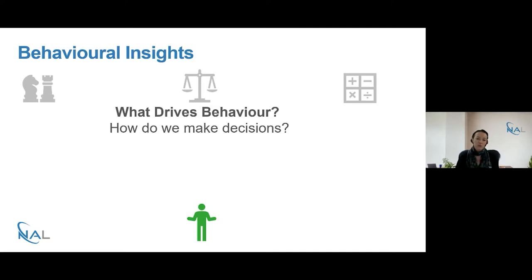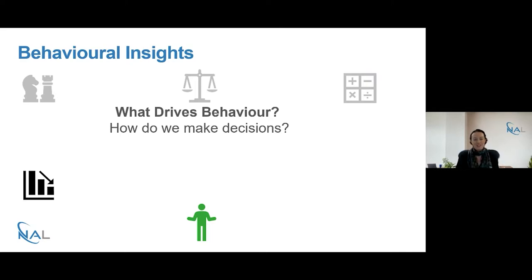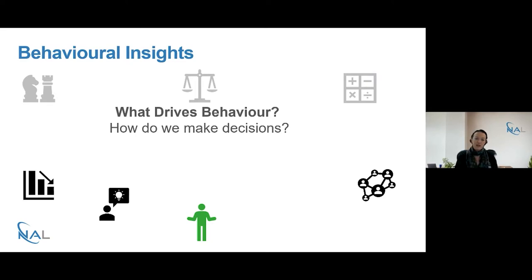There's a huge number of principles or biases that explain our behaviours. For example, humans are really motivated to avoid loss. We fear loss such that we will actually expend more energy to avoid a loss than to get a gain of the same equivalent value. We're also fairly influenced by those people around us, especially if they seem similar to us. We like to think of ourselves as rational information processors, but our information is coloured by our beliefs, our biases, and the way that information is presented or who presents it to us.